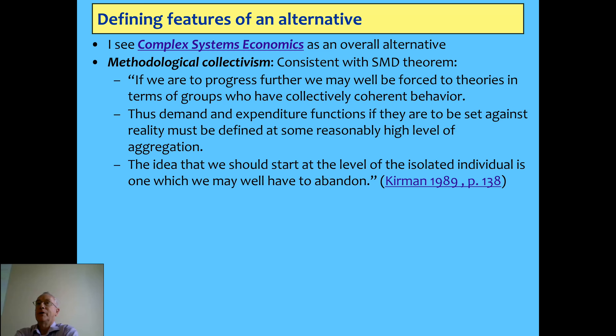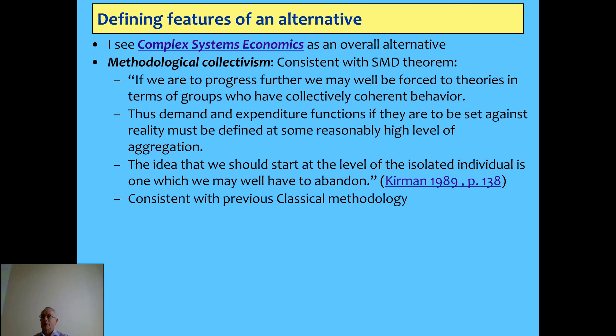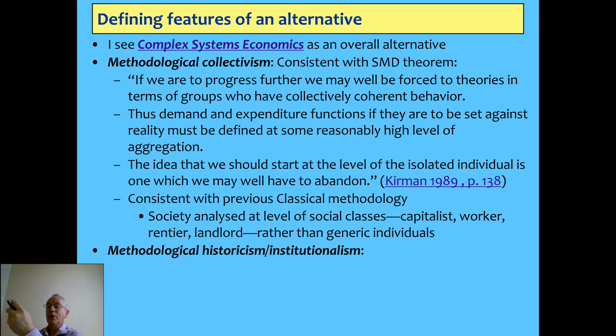He's since given up on the neoclassicals, but that was the honest response to that theorem — there was no way to go from the theory of an individual to the theory of a market, let alone to the theory of an economy. They bullshat their way to say they could do it. This actually confirms the classical school's theory: the classical school talked in terms of social classes. Marx had workers and capitalists; Ricardo had workers, capitalists, and landlords. The idea of social classes was an essential part of the classical methodology.